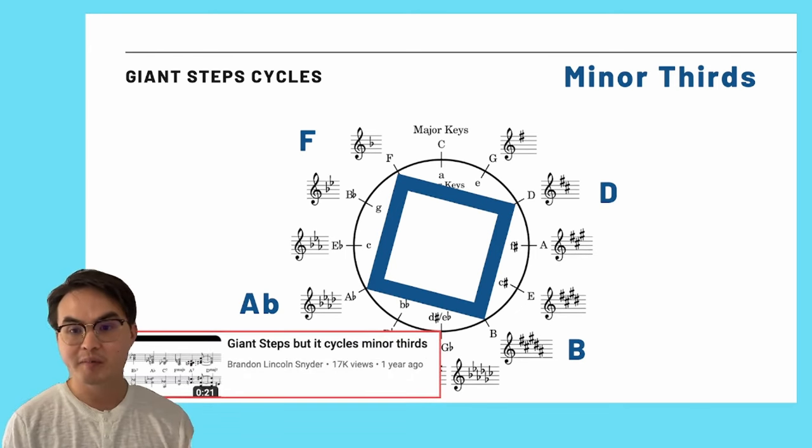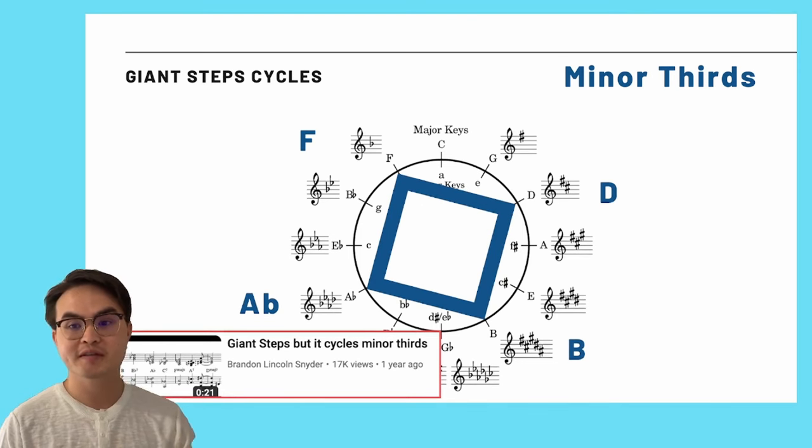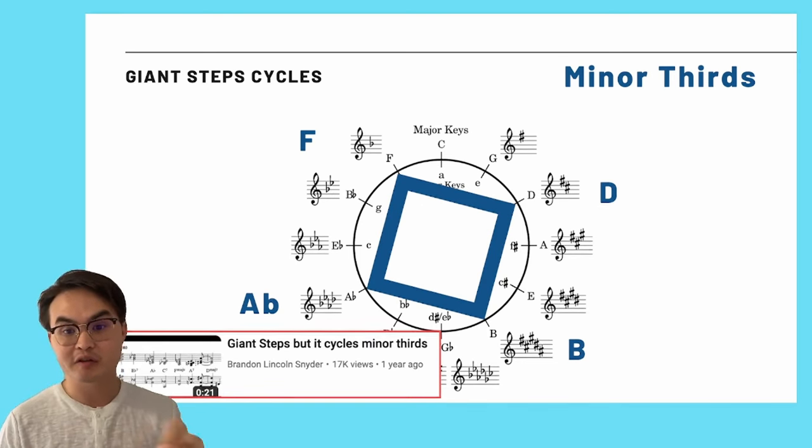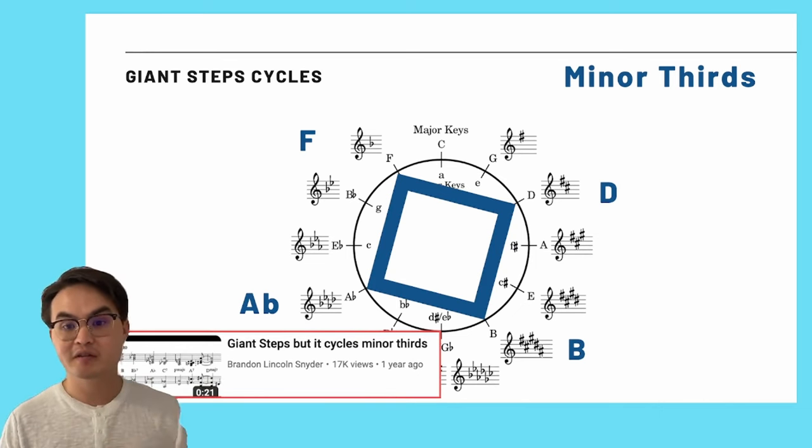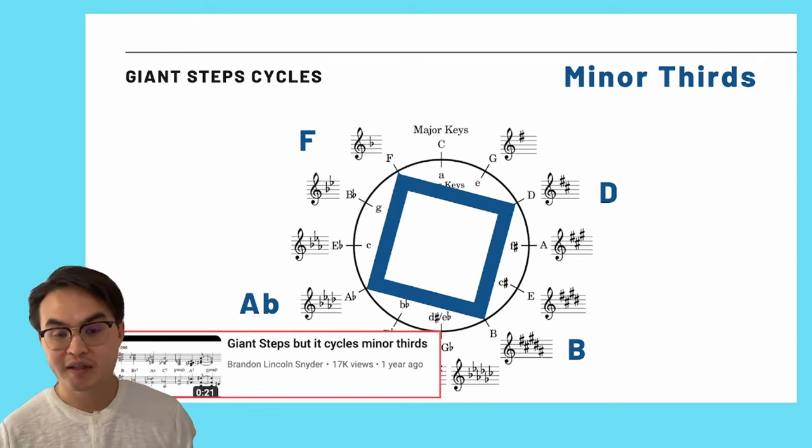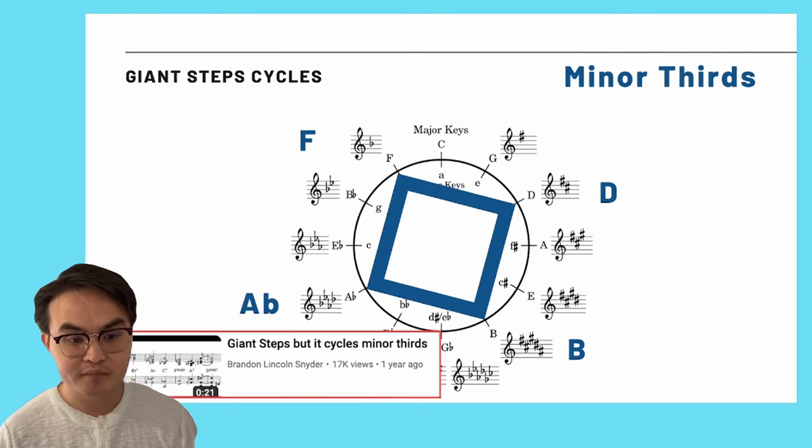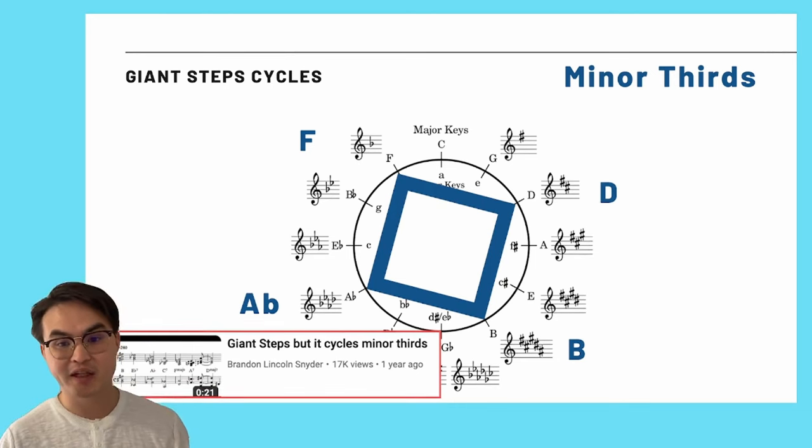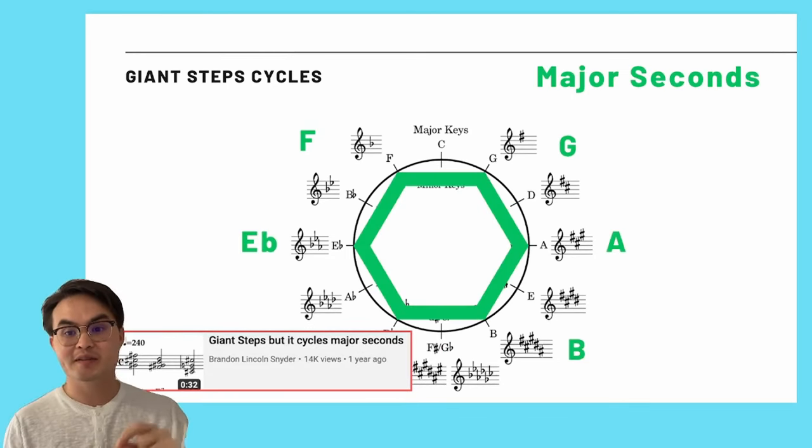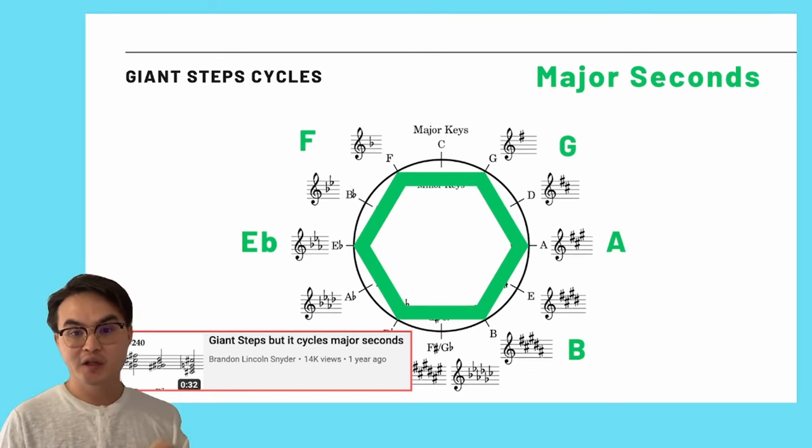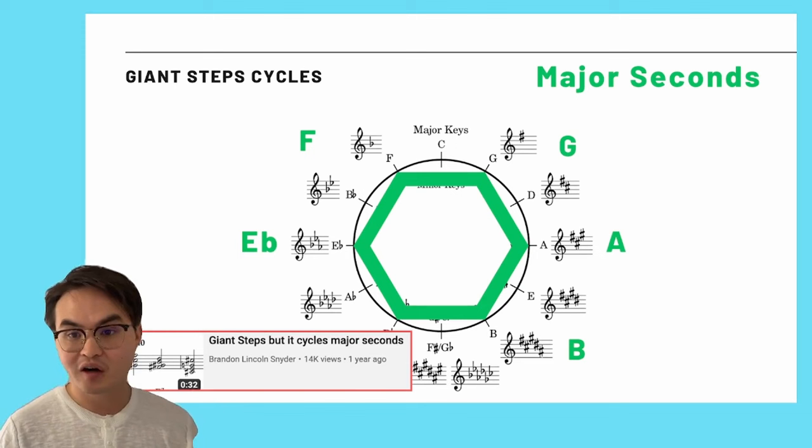I actually made a video about a year ago trying this out where Giant Steps is not cycling around major thirds, four semitones, but it cycles around minor thirds, three semitones, and then makes its way around the circle of fifths in that way. I did this actually for a couple different sort of shapes.